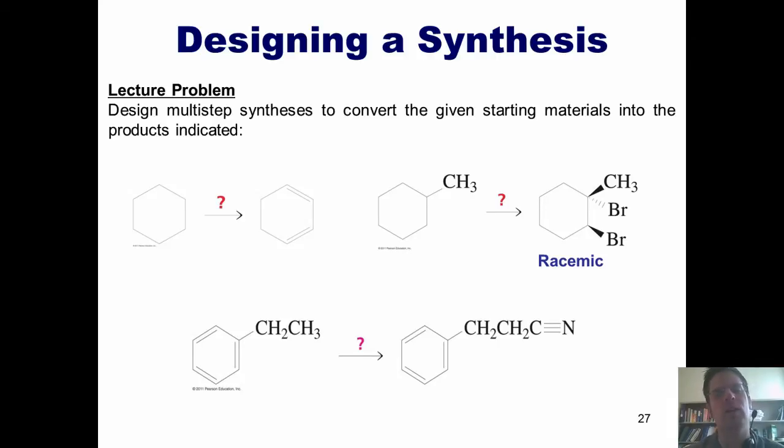All right, in this, our final lecture from Chapter 12's coverage on radical chemistry, I'm going to show you several examples from our book in which we get the opportunity to design syntheses of simple molecules using the various reactions we've learned in this and preceding chapters. Here's the lecture problem. I want you to design multi-step syntheses to convert the given starting materials into the products indicated. Now, as I'm going to show you the answers momentarily, you're welcome to pause this video at this point and attempt them first on your own.